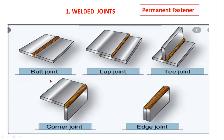Examples for welded joints include: butt joint, lap joint, T-joint, corner joint, and edge joint.